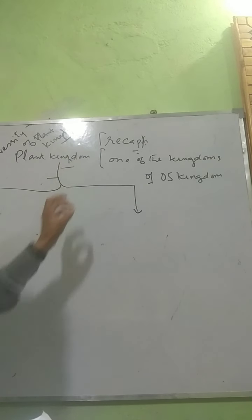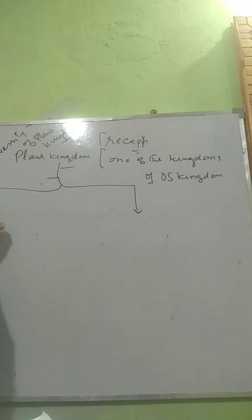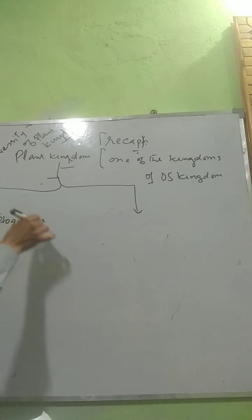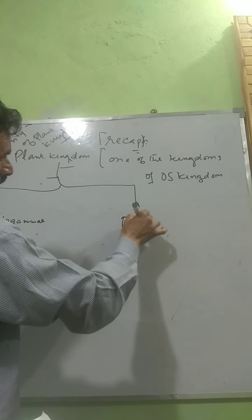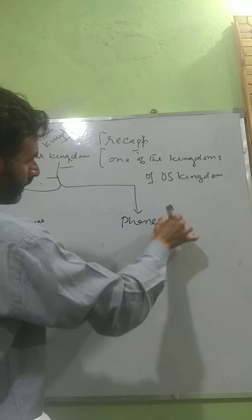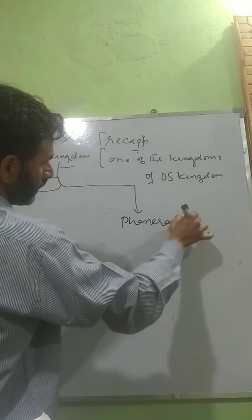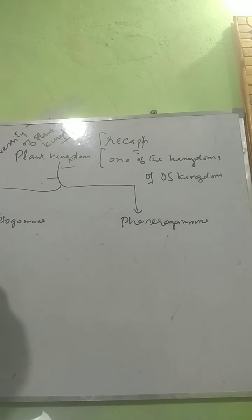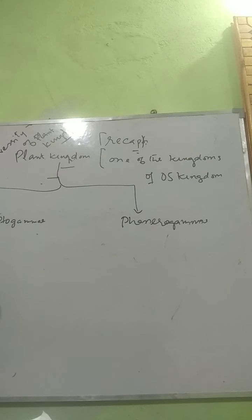The two sub-kingdoms are Cryptogamia and Phanerogamia. Moving further down the classification, these are the two sub-kingdoms. After kingdom, we have sub-kingdom, and then we have division.